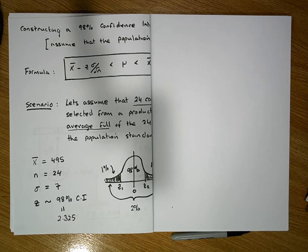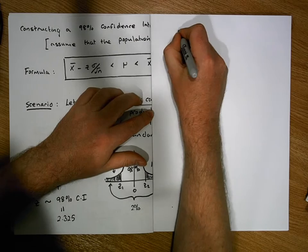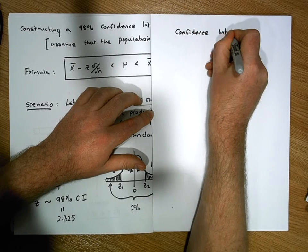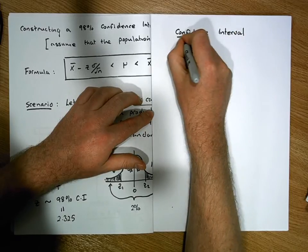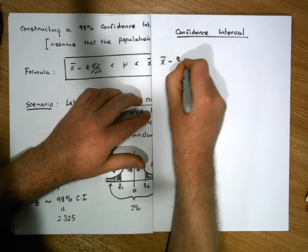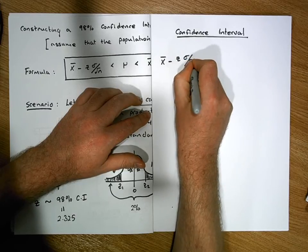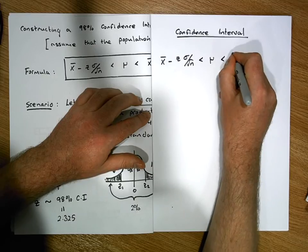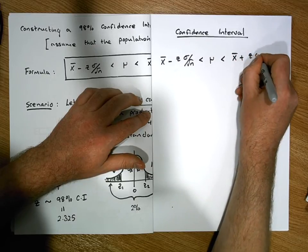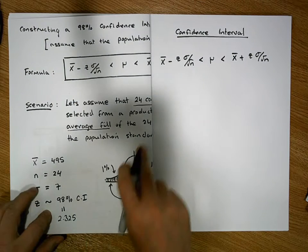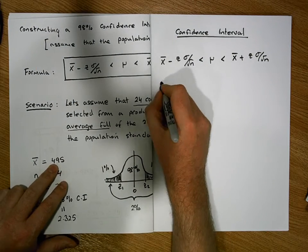We're going to construct our 98% confidence interval. The formula we require for our confidence interval is: x-bar minus z times sigma over the square root of n is less than the population mean, which must be less than x-bar plus z times sigma over the square root of n.